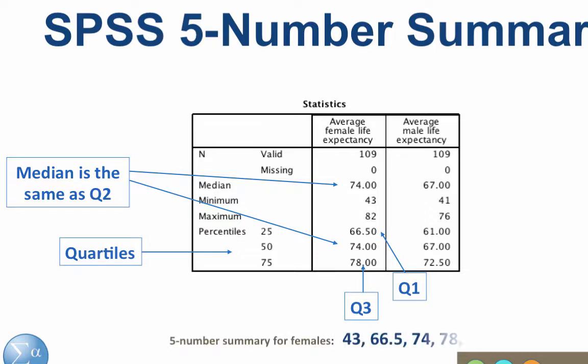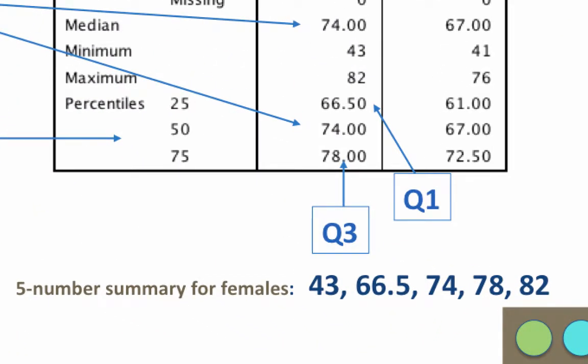So the five number summary for female life expectancy is 43, 66.5, 74, 78, 82.